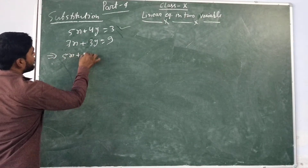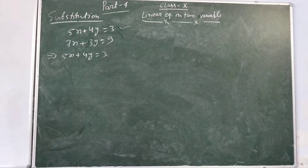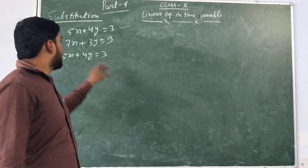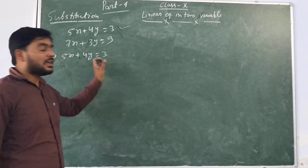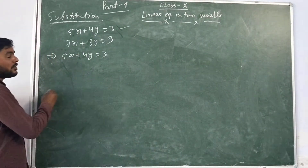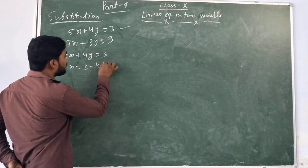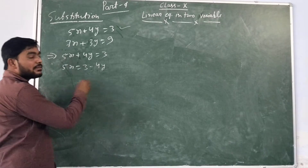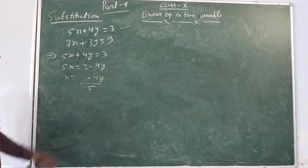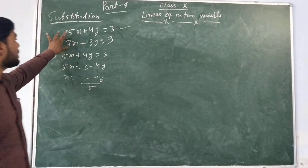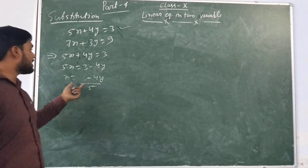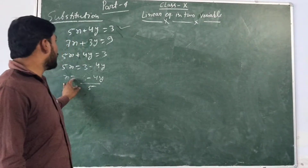From the first linear equation 5x + 4y = 3, we get the value of x in terms of y. So 5x = 3 − 4y, which gives x = (3 − 4y) / 5. This is the value of x. Now put this value of x into the second linear equation 7x + 3y = 9.